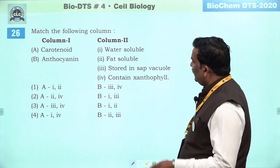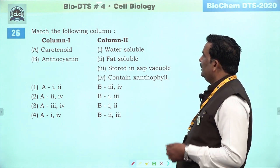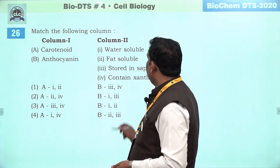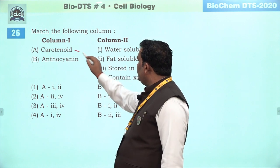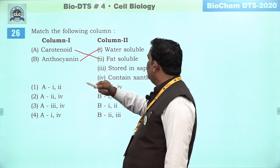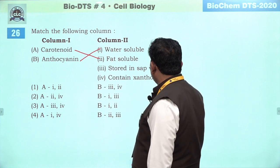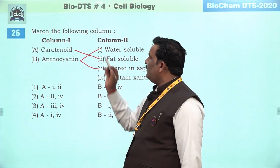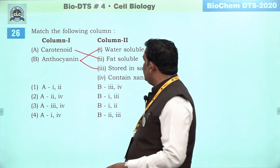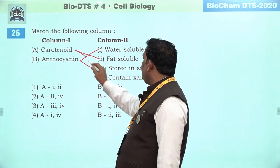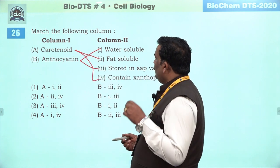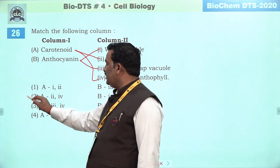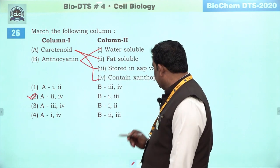Next question: based on the following column — carotenoid and anthocyanin. Carotenoid are fat soluble — NCRT kehti hai — anthocyanin are water soluble, stored in vacuole, and contain xanthophyll. Carotenoids mein xanthophyll aur carotene ki presence paai jaati hai. Toh A ke saath ham fourth ko bhi connect karenge — A mein aa raha hai second and fourth, jo second option mein nazar aa raha hai. Isliye humare liye second better answer hai.